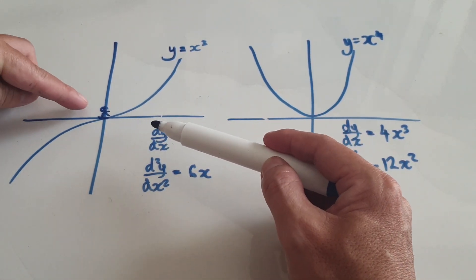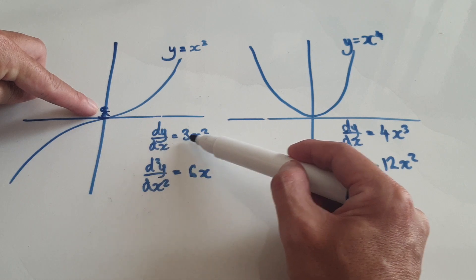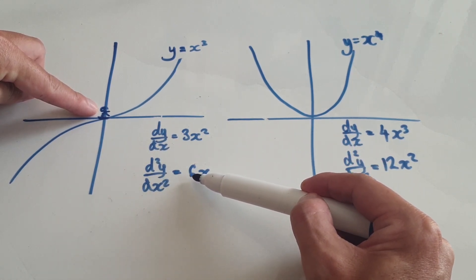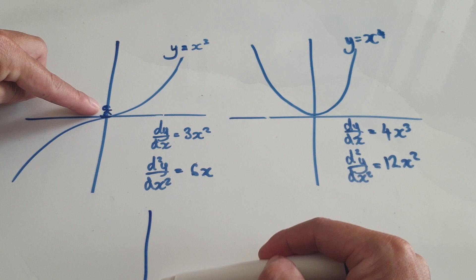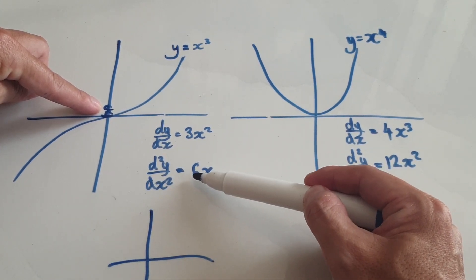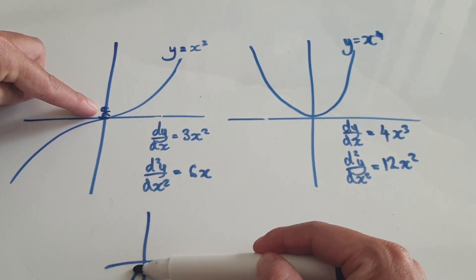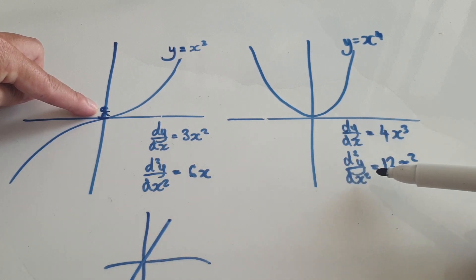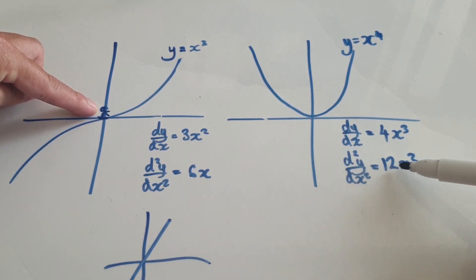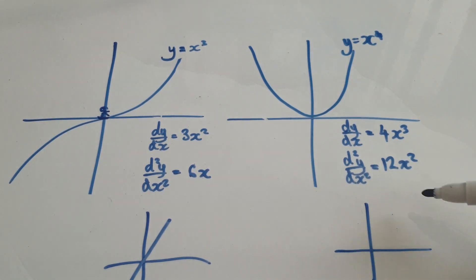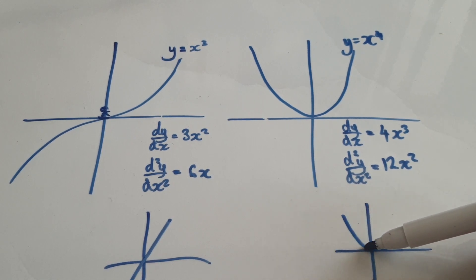So when you're standing here, the gradient would be zero. The concavity is 6x. So if you were to draw a graph, imagine y equals 6x — it would look something like this. Over here, imagine this is like y equals 12x squared. So when you draw a graph of concavity versus x for this one, it would look something like this.